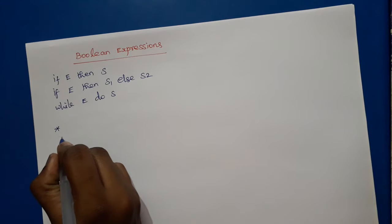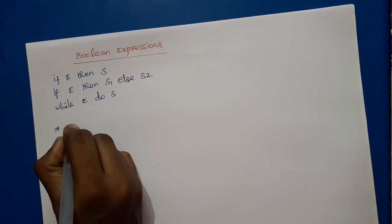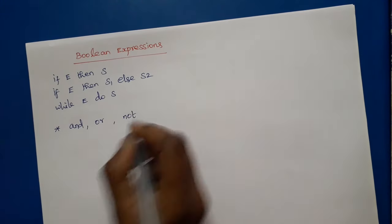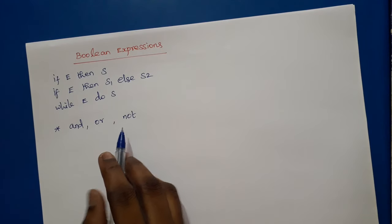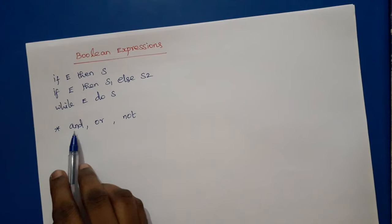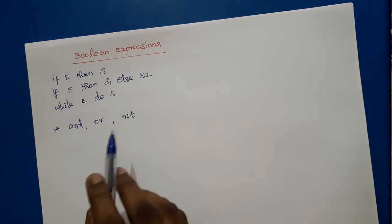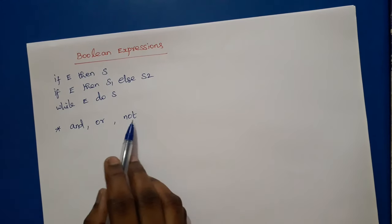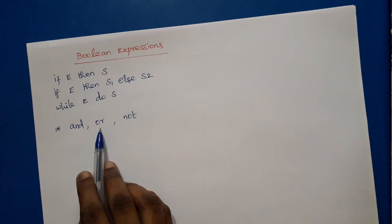Boolean expressions are formed with the help of three Boolean operators: AND, OR, and NOT. AND and OR are left associative, and NOT is a right associative operator. NOT has the highest precedence out of all three. AND has the next higher precedence, and OR is at the lowest precedence level.